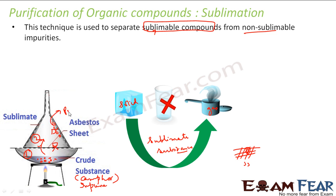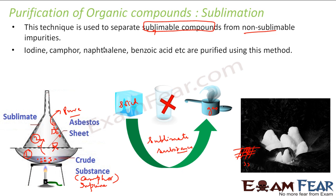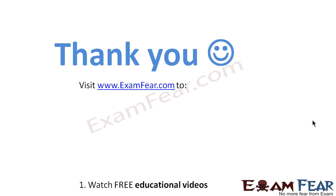You get pure sublimable organic compound in chamber two. Examples of sublimable organic compounds that can be purified this way include camphor, iodine, naphthalene, and benzoic acid. This method cannot be used to purify non-sublimable compounds such as water or sulfuric acid — in fact, most compounds are non-sublimable, so sublimation has limited applicability.